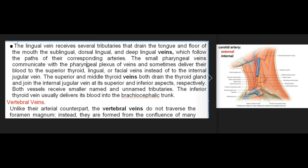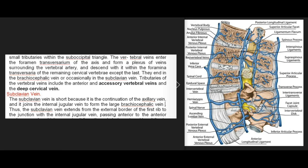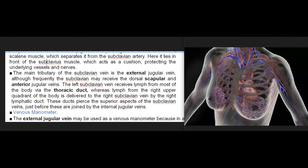Unlike their arterial counterpart, the vertebral veins do not traverse the foramen magnum; instead they are formed from the confluence of many small tributaries within the suboccipital triangle. They enter the foramen transversarium of the axis and form a plexus surrounding the vertebral artery, descending with it within the foramen transversaria of the remaining cervical vertebrae, ending in the brachiocephalic vein or occasionally the subclavian vein. Tributaries of the vertebral veins include the anterior and accessory vertebral veins and the deep cervical vein. The subclavian vein is the continuation of the axillary vein and joins the internal jugular vein to form the brachiocephalic vein, passing anterior to the anterior scalene muscle.